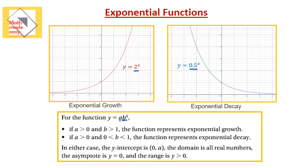Now, if a is greater than 0 and b is greater than 1 — like 2 in our example — then the function represents exponential growth. So if the number that has a power of x is greater than 1, then this is an exponential growth, even if it's not graphed. Now if a is greater than 0 and b is between 0 and 1 — so b is less than 1 but greater than 0, meaning either a decimal or a fraction but not negative — then, like the half we had here, the function represents exponential decay.